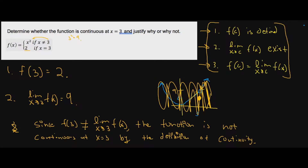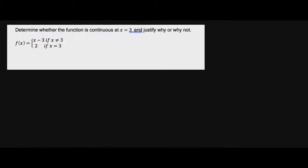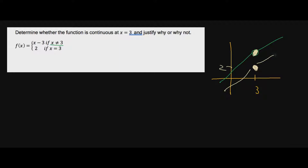Determine whether the function is continuous at three — let's go to this one. The value I'm interested in is three. This says x cannot equal three, but it can be everything else. So I'll draw some straight line as the graph. When x equals three, my y value is two, so it's filled in. Now my goal is to find out: is this filled-in point actually sitting on the line? Is the green line actually passing through here or not? Looking at this graph and knowing it's linear, I'm assuming not — but let's begin.